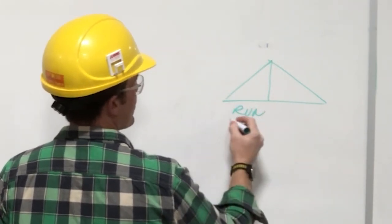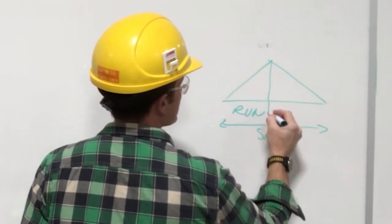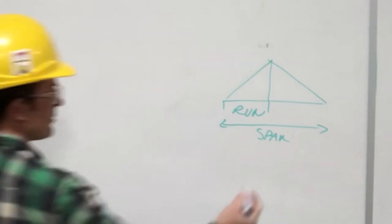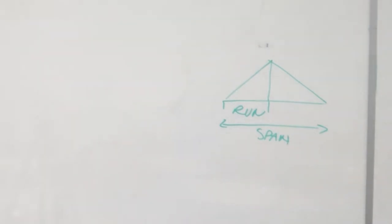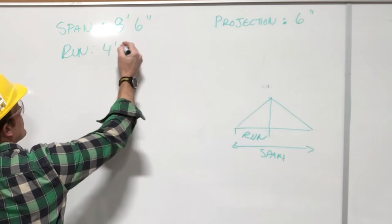We have run is half of the span. So our span is 8'6", and our run is 4'3".